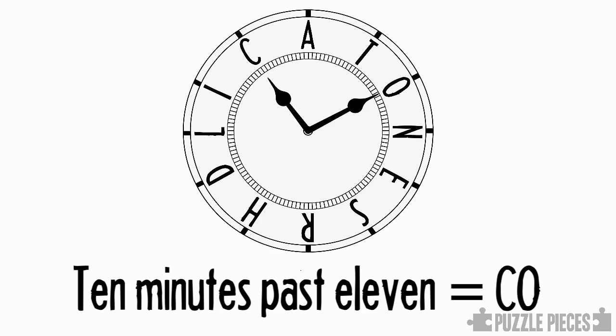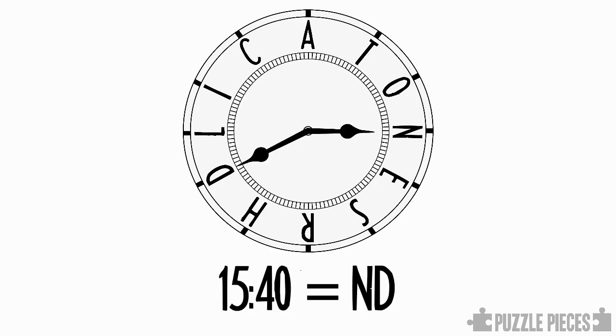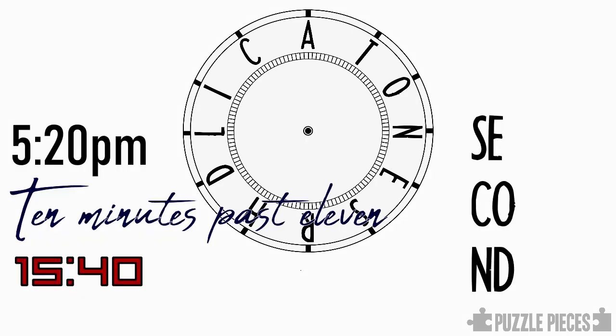And our final time here is expressed in a 24 hour clock, so it's 3:40. Moving the hour and the minute hand to the corresponding positions there, we get the letters N D. So in this case the solution to the puzzle is second.